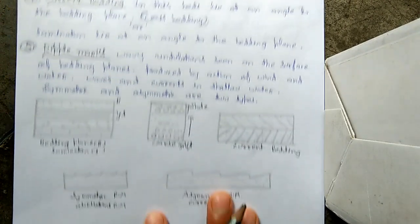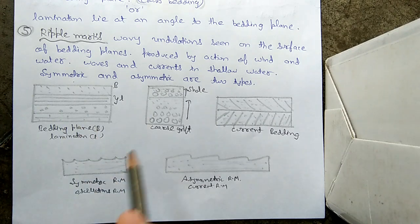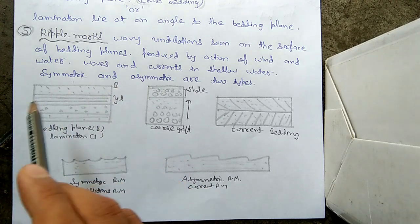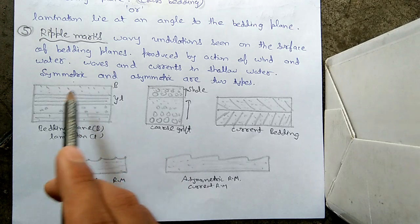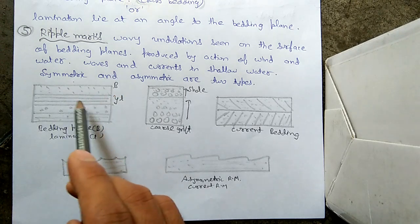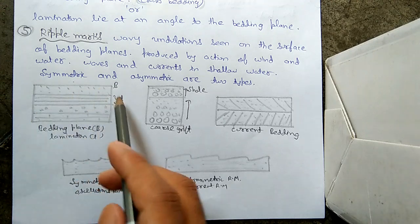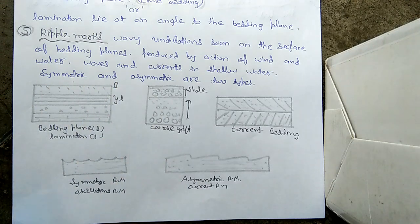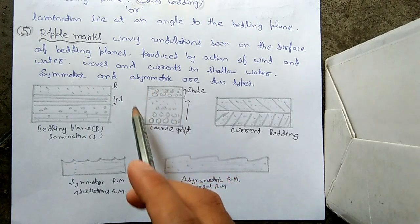Looking at this diagram, you can see these are beds. The thin beds — labeled with small 'L' — are less than one centimeter thick and are called lamination. 'B' represents the bedding plane. This layer is deposited by sediments, which is why it is called the bedding plane.